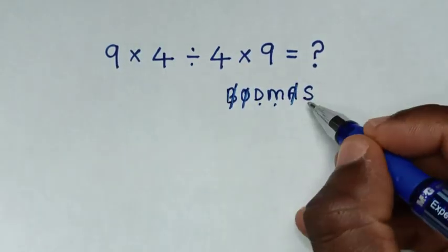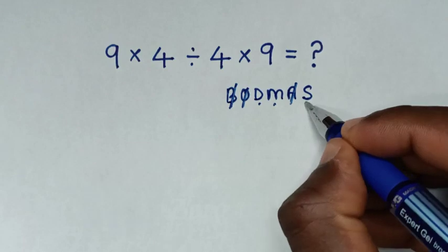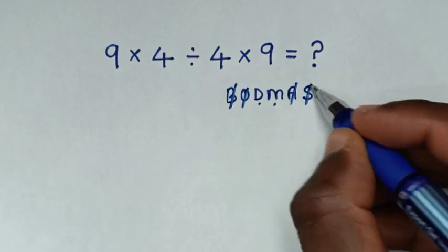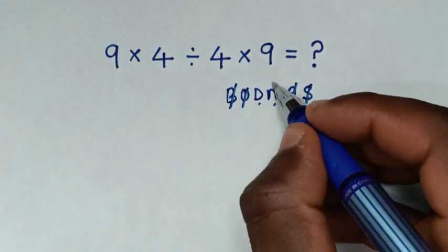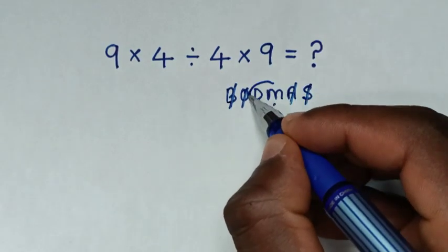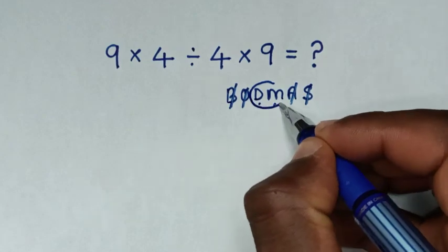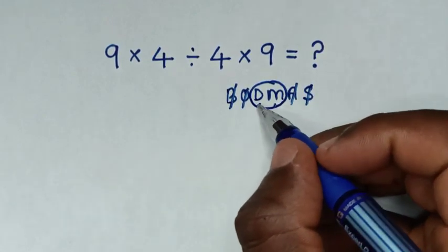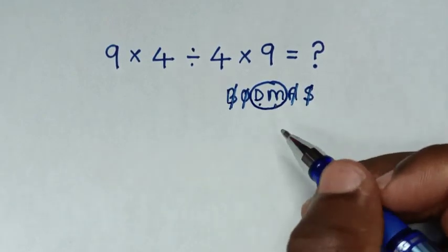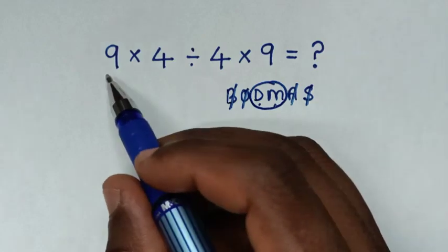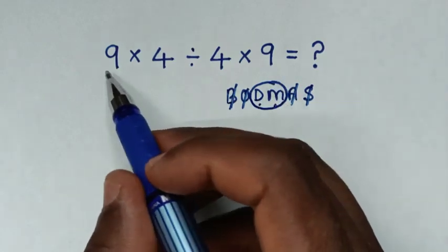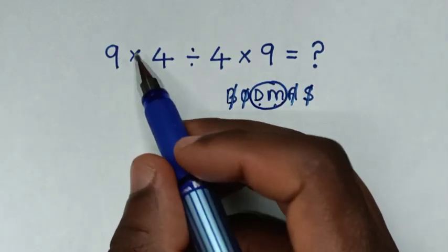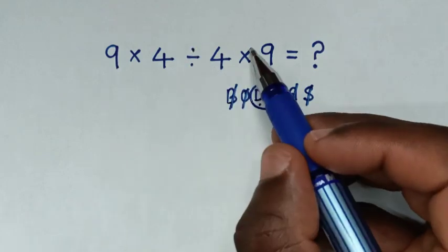A stands for Addition — we don't have addition. And S stands for Subtraction — no subtraction. Now to deal with this group of division and multiplication, we'll deal with them according to which operation starts first. In this problem, it starts first with multiplication, then division, then multiplication.